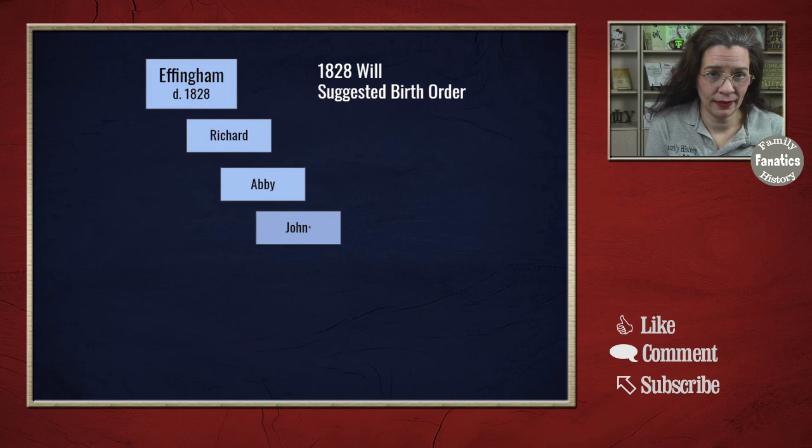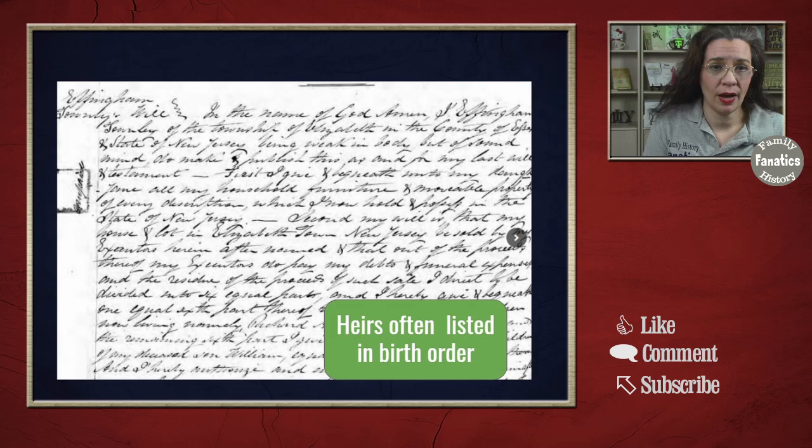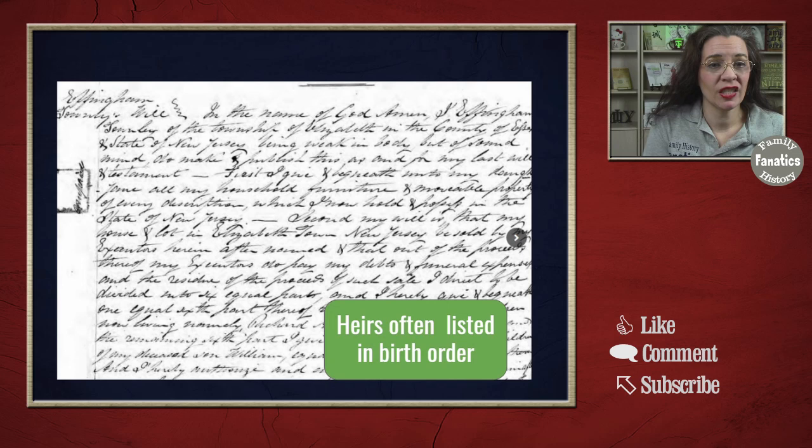The will also stated that there is a William who is deceased, so I'm not entirely sure where William falls into this birth order. But often in wills and probate records, the order of the names suggests birth order. I want to go one step further and not rely on the suggested — I want to find some dates to put to it.